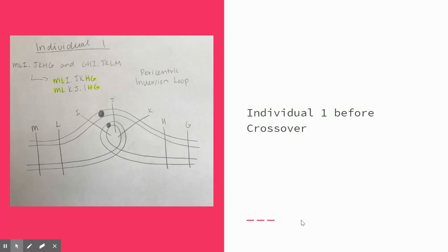This is individual one before the crossover event. To determine the setup and overlap the loci, the given chromosomes must be put in alphabetical order. Once this is done, we match up the similar loci to determine the type of aberration. In this case, the yellow represents loci in the same location.